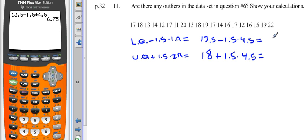And this tells me that any value in my list lower than 6.75 is an outlier. Now it does not mean that 6.75 is an outlier. It means anything lower than this would be an outlier. Notice there's nothing in my list lower than that number. So there are no outliers on the low end.